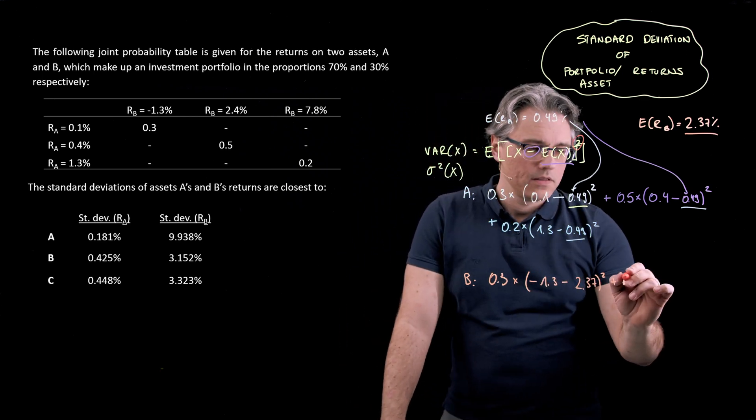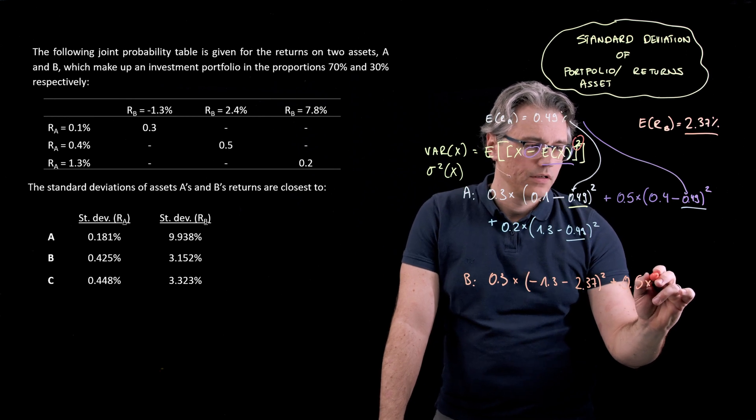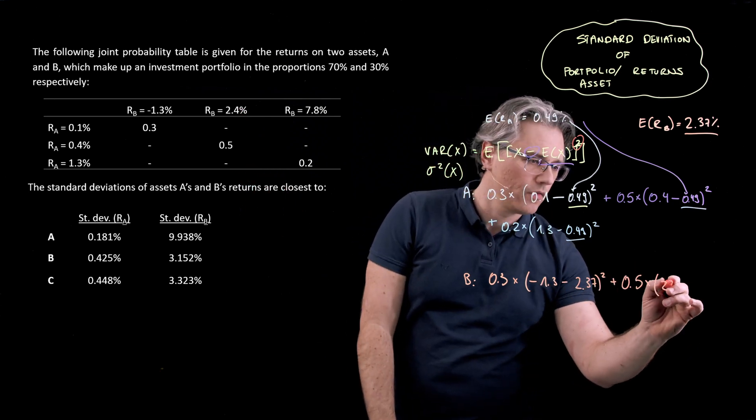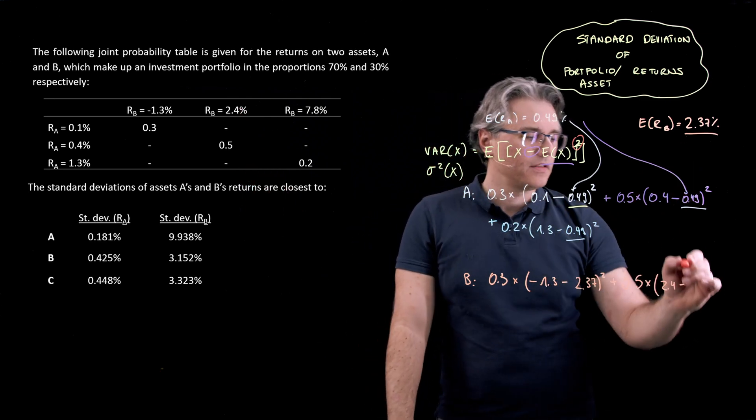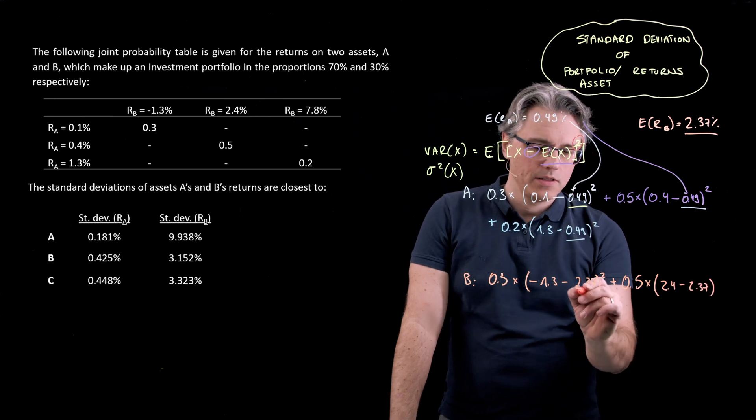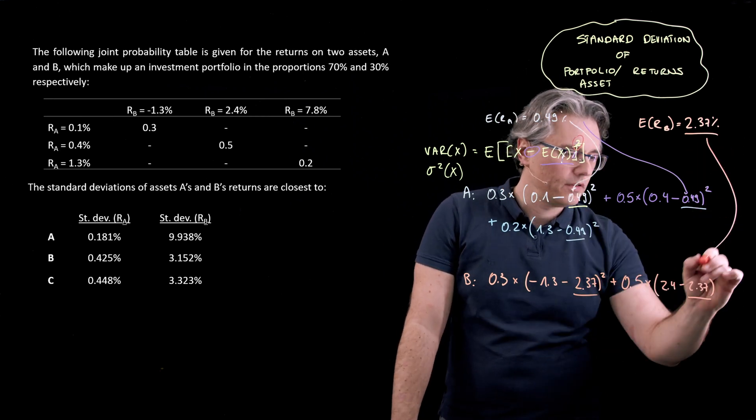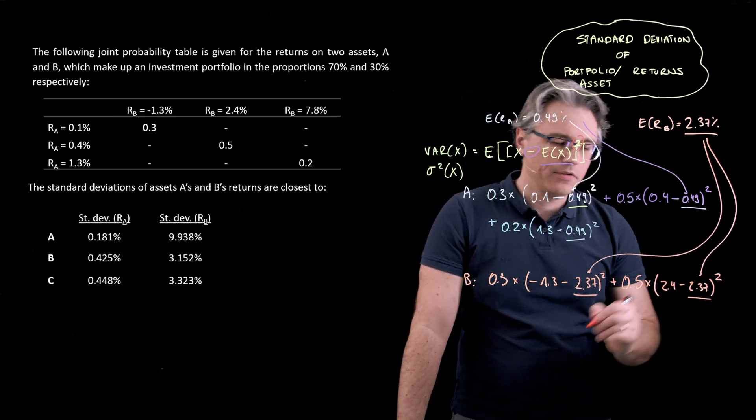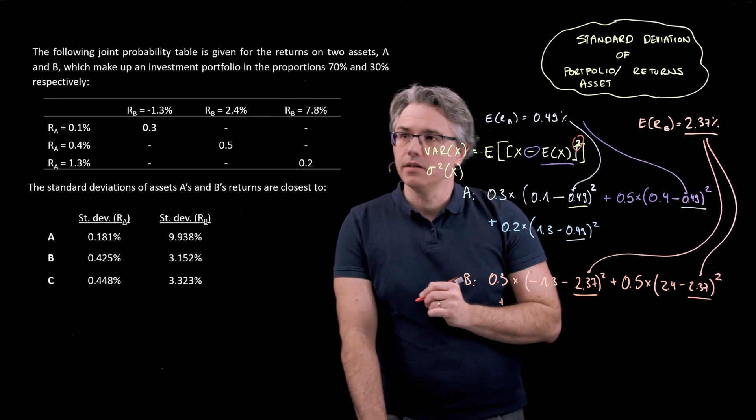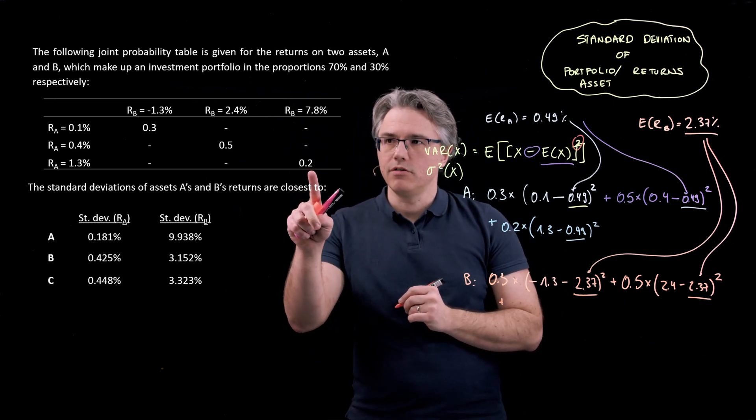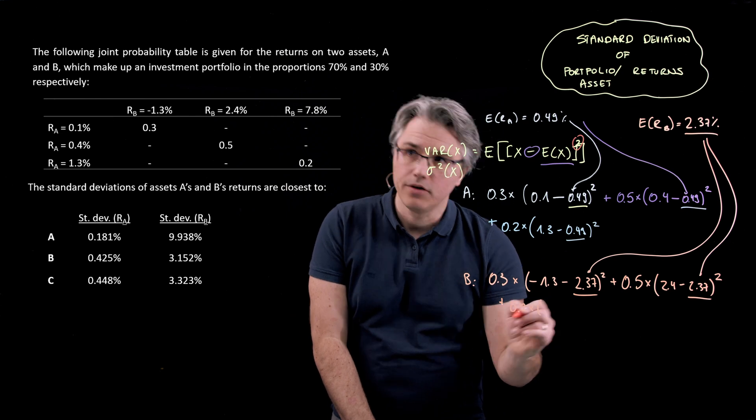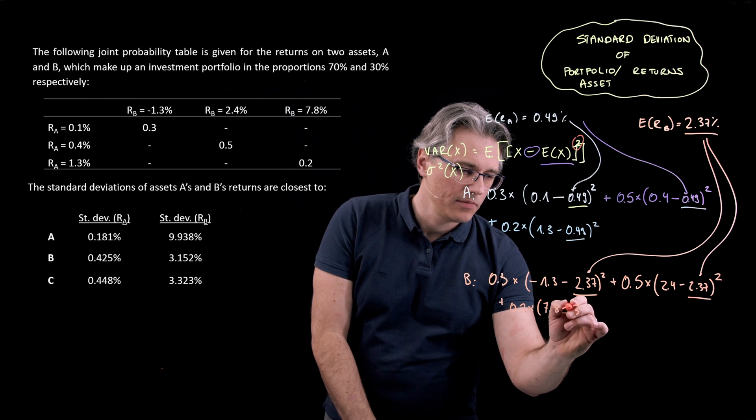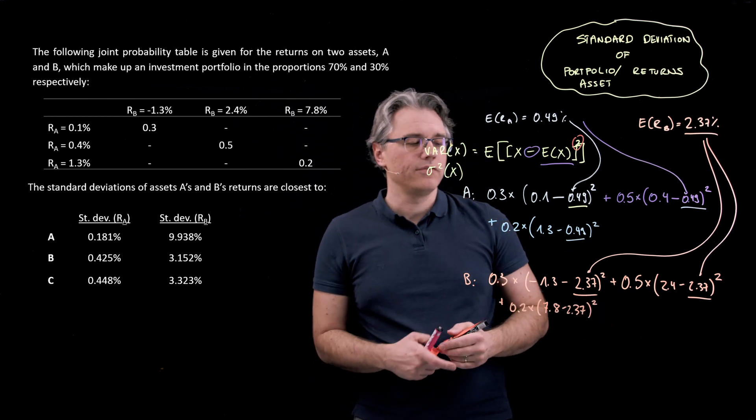Plus 0.5 times this value, 2.4, minus the expected value of 2.37. So as you can see, this 2.37 is consistently being taken from what we already computed in the previous question. And the final one would be, with a probability of 0.2, B can take on a level of 7.8%. Still minus that 2.37 to the power of 2.